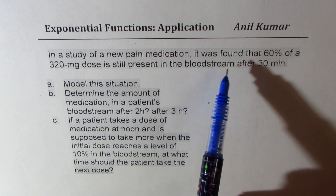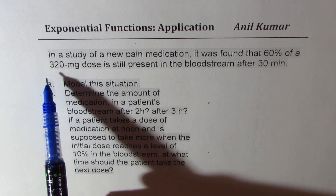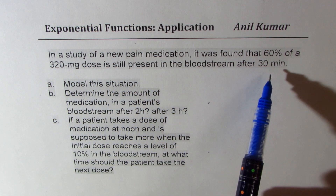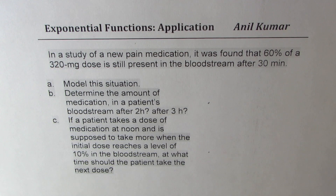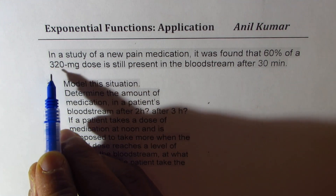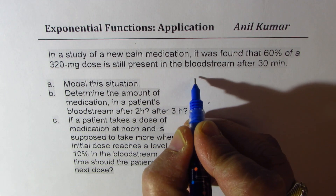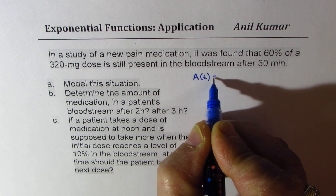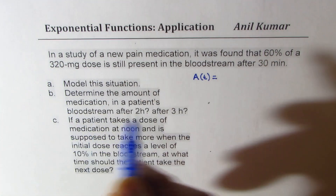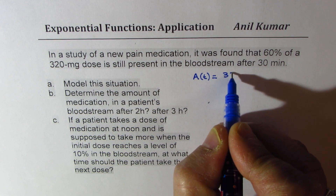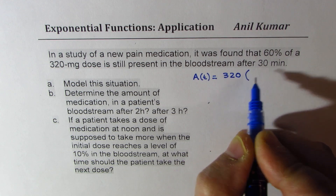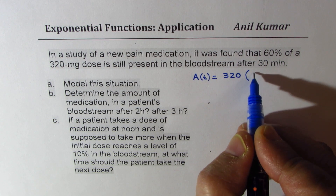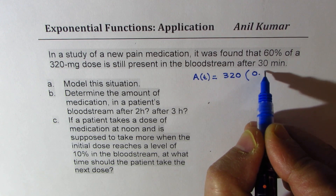What we are given here is that 60% of a 320 milligram dose is still present in the bloodstream after 30 minutes, that is half an hour. The initial amount is 320, so we can say the amount of medicine at any time t is equal to initial amount of 320. The decay rate is 60%, so 0.60.